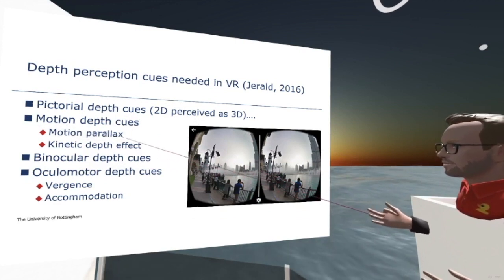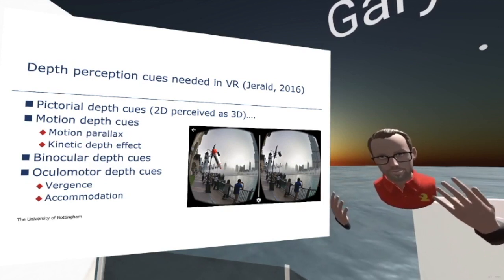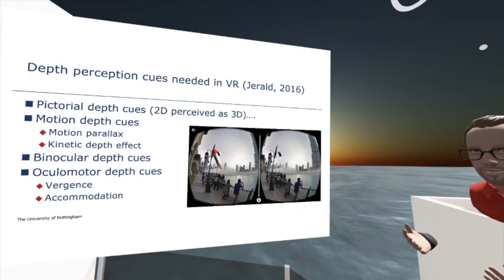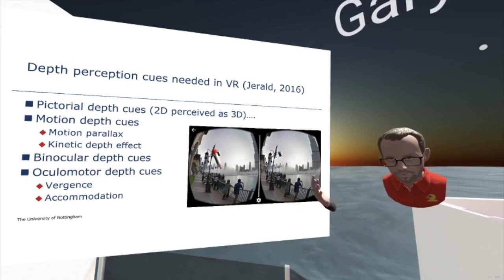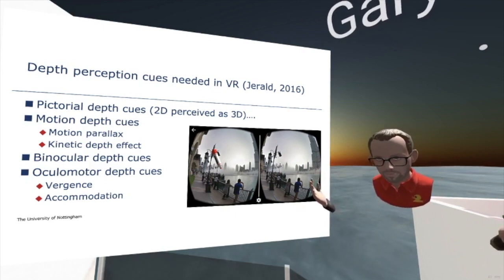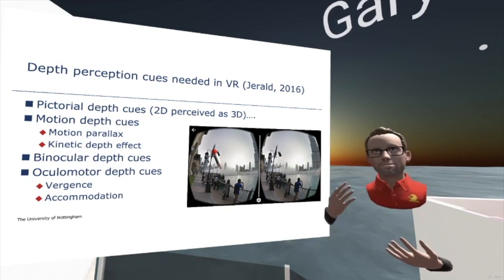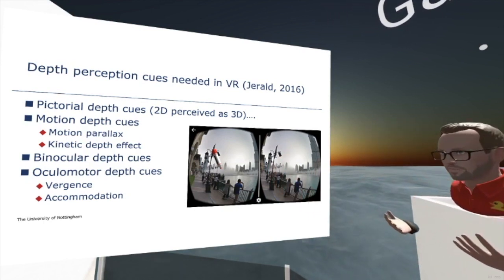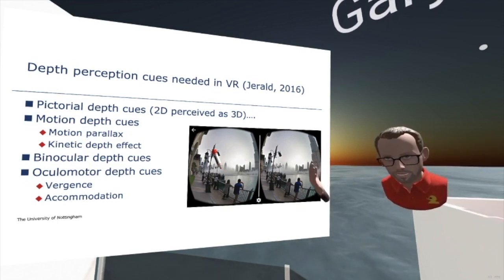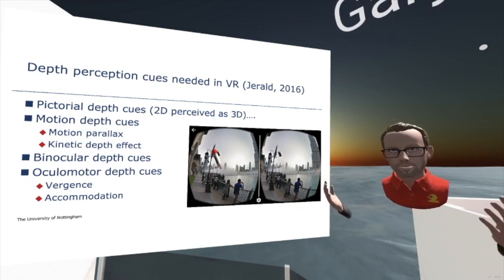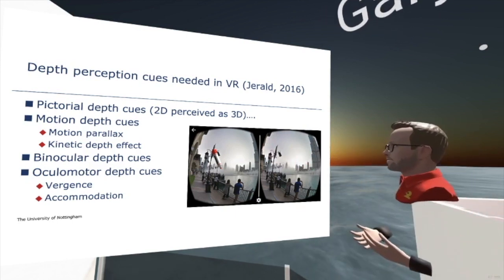Motion depth cues are cues related to how you perceive depth in relation to objects that are moving. Motion parallax is essentially when you have things that are close to you moving at a particular speed — there's a sense of blurriness in those objects as they move past you. The closer they are, the faster they seem to be going, even if they may be the same speed as something further away. This is particularly important in the driving simulator, thinking about traffic going past you versus objects much further away that could be going exactly the same speed.